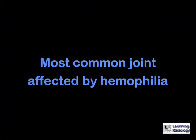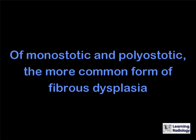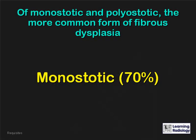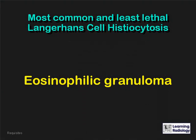What is the most common joint affected by hemophilia? The knee. Of monostatic and polyostatic, which is the more common form of fibrous dysplasia? The monostatic form. What is the most common and least lethal of the Langerhans cell histiocytoses? Eosinophilic granuloma.